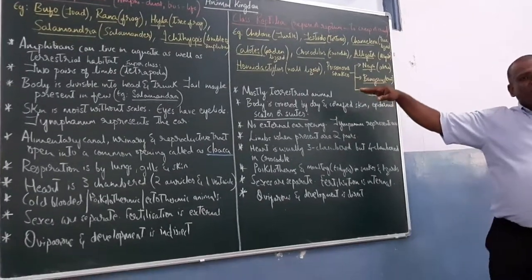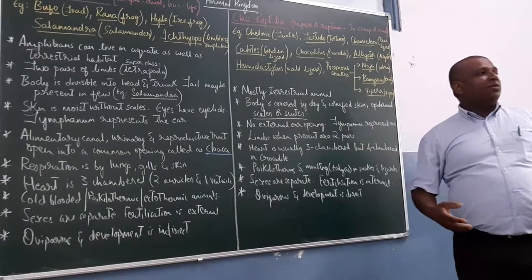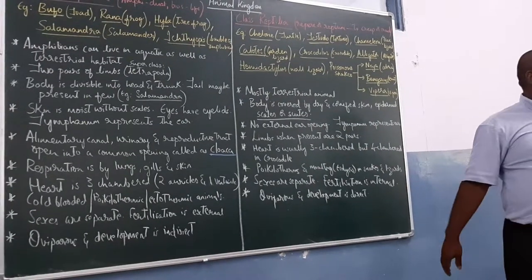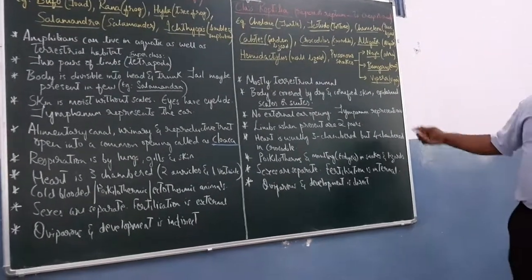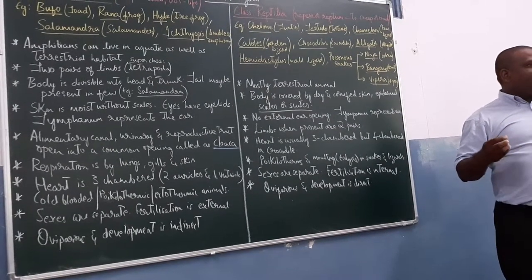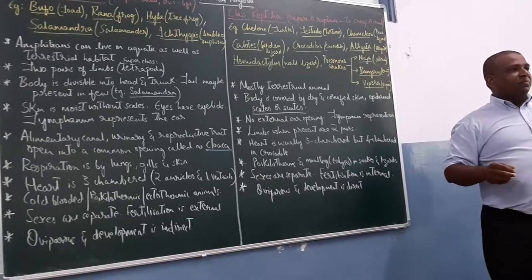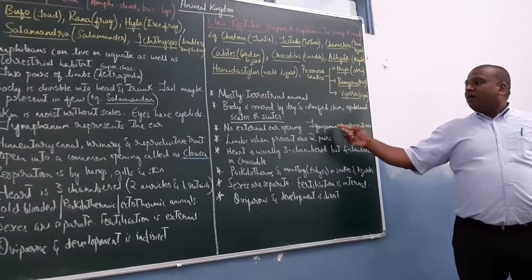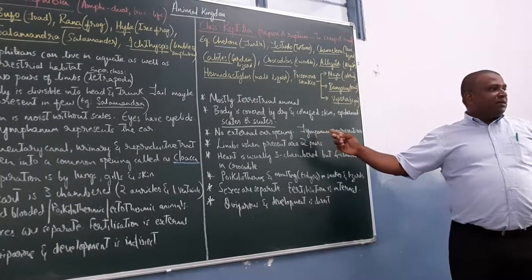So mostly terrestrial animals. Reptiles are mostly terrestrial animals. The body is covered by scales or scutes. Some of them have cornified or hardened skin. And no external ear opening.